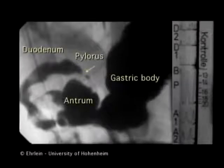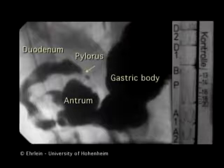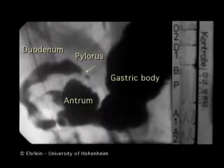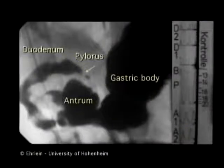Before demonstrating the effects of dopamine, the normal emptying of a non-caloric viscous meal is shown. The gastric body, the antrum, the pylorus and the duodenum are labeled. In the control experiments, saline is infused intravenously.